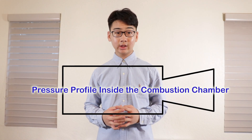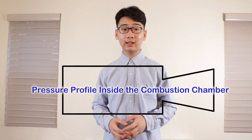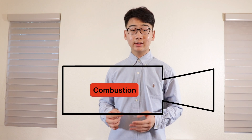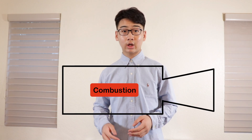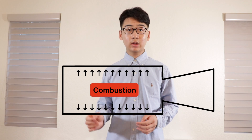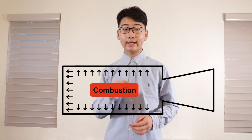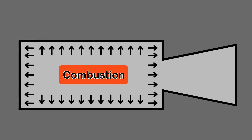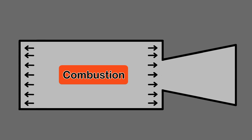This is the pressure profile inside the combustion chamber. Combustion creates pressures on the top, the bottom, the front, and the back of the casing. The top and bottom forces can be eliminated because they don't contribute to the leftward force.